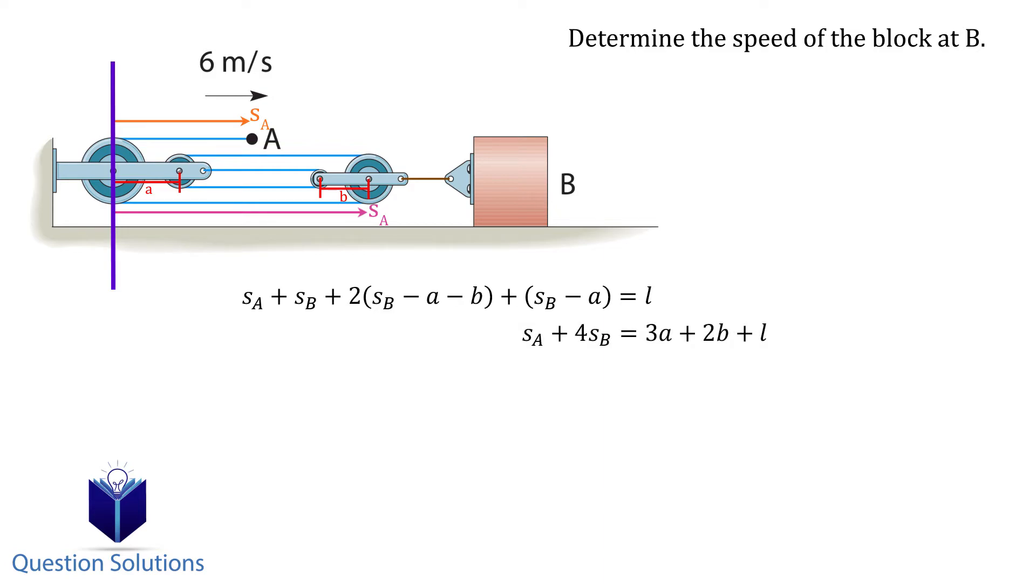Let's simplify the equation up a bit. Now we can take the derivative which gives us velocity while all the constant lengths become 0.